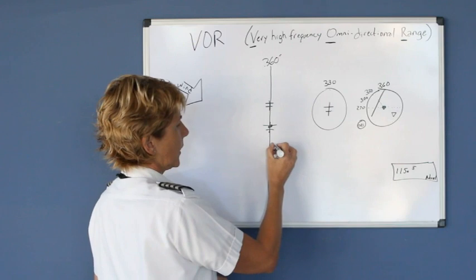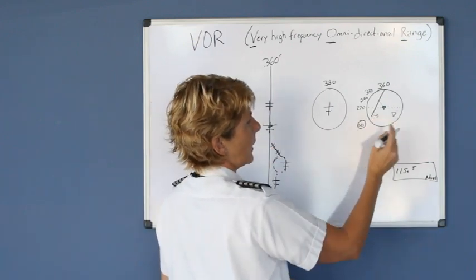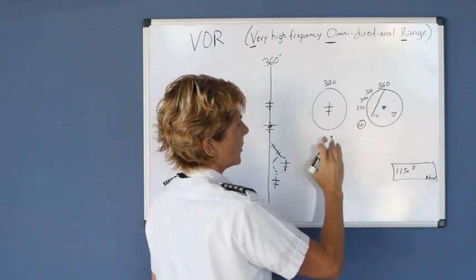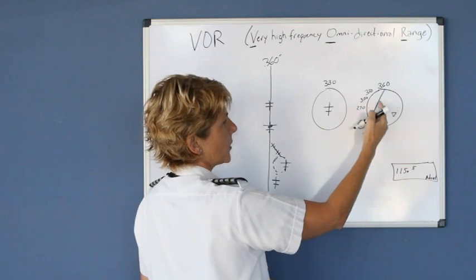Once you get closer to your course to merge back on that course, your needle will start trending back toward the center. And as it trends back toward the center, you could shallow out some of your intercept angle.